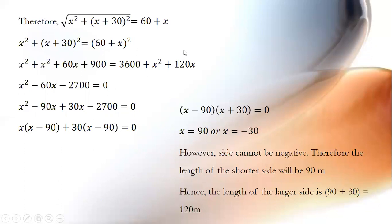Let us open all the brackets. Solving, we get x squared minus 60x minus 2700 equals 0. We can split the middle term: minus 60 can be written as minus 90 plus 30. Solving, we get x equals 90 or x equals minus 30. However, a side cannot be negative. Therefore the length of the shorter side is 90 meters, and the length of the larger side is x plus 30, which is 90 plus 30 equals 120 meters.